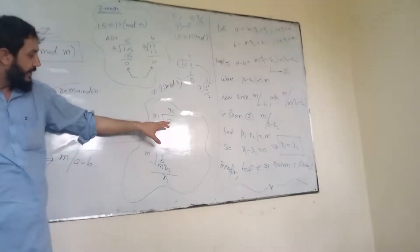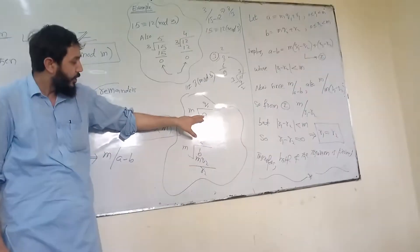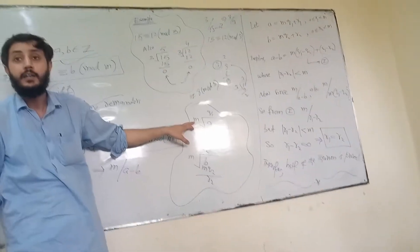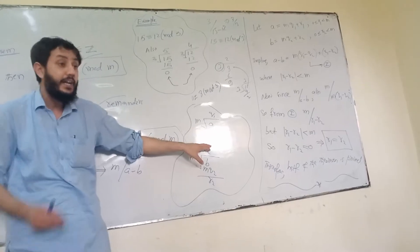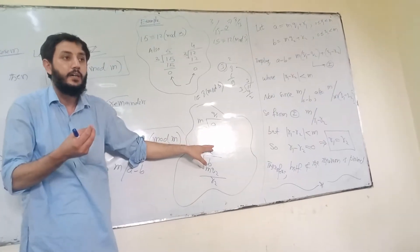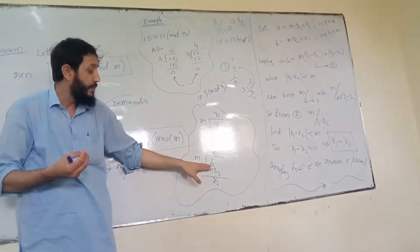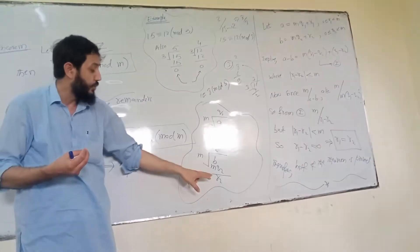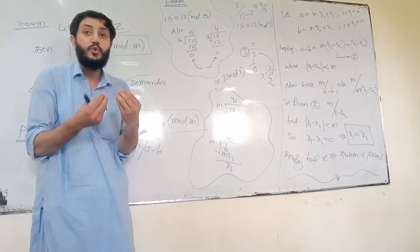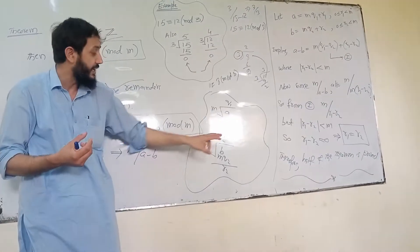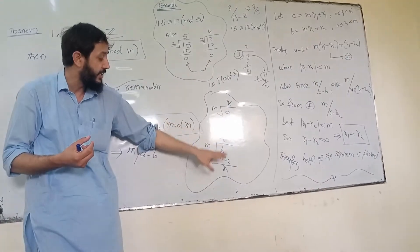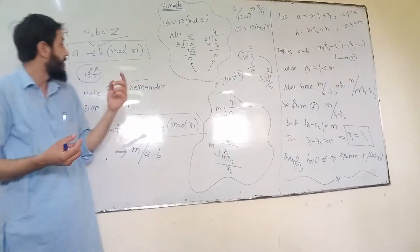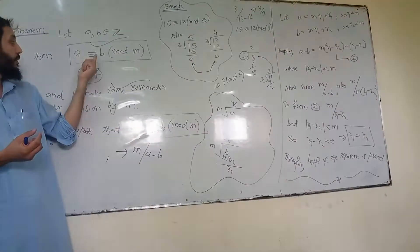Now we suppose that when we divide A, we get remainder R1, and when we divide B, we get remainder R2. Our target is to show that R1 equals R2.